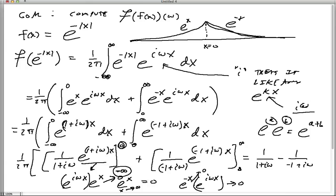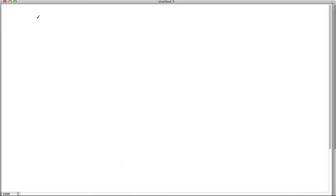All right, so I'm going to get a new sheet of paper out here and write it down again. So our result was there's a Fourier transform of e to the negative absolute value of x was going to be 1 over 1 plus i omega minus 1 over negative 1 plus i omega.